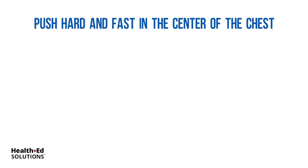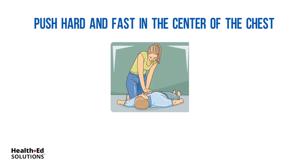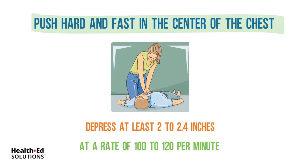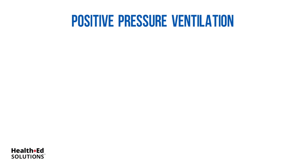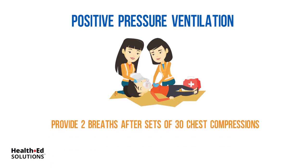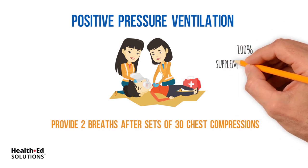Push hard and fast in the center of the chest. To initiate CPR, use the two-handed technique and apply chest compressions to the lower half of the sternum. Depress at least 2 to 2.4 inches, allowing for full chest recoil on the upstroke, at a rate of 100 to 120 compressions per minute. When using a bag valve mask or other barrier device, provide two breaths after every 30 chest compressions with 100% supplemental oxygen.